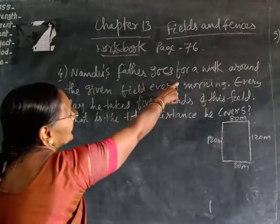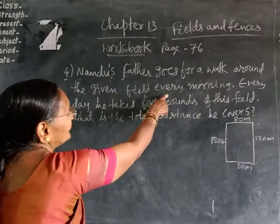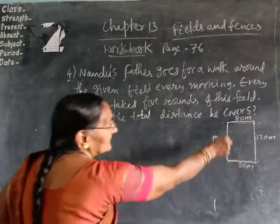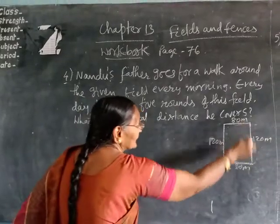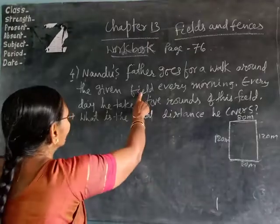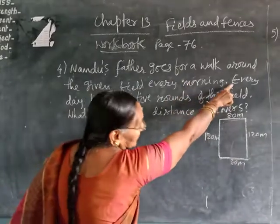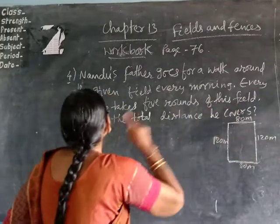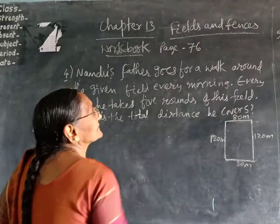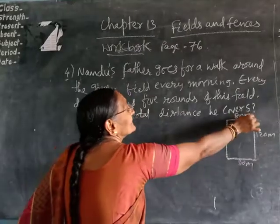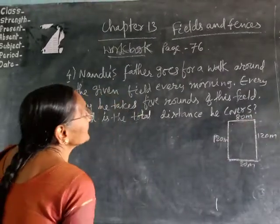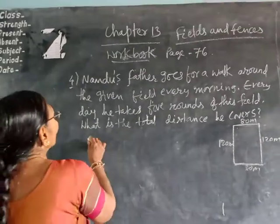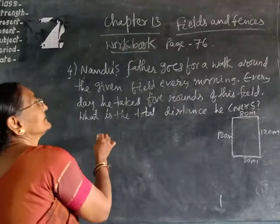Nandu's father walks around the given field every morning. This is the field given. This field is looking like a rectangular shape. Every day he takes 5 rounds of this field. What is the total distance he covers? Total distance means the distance from boundary around the figure — that is the perimeter. So the given field is rectangular shape.